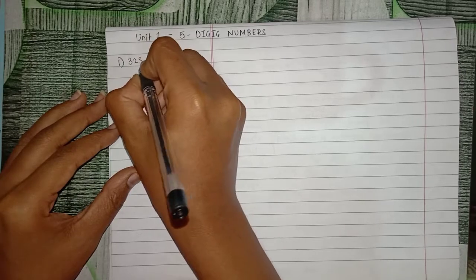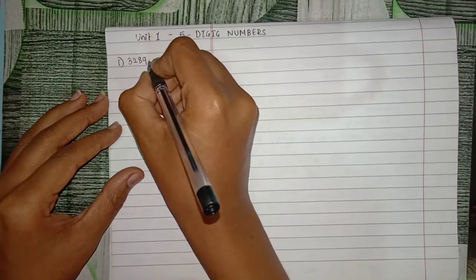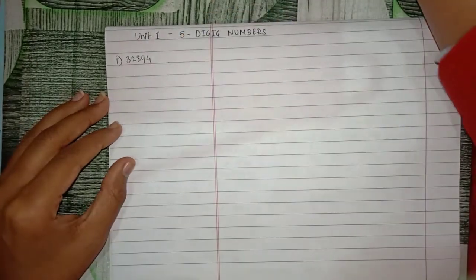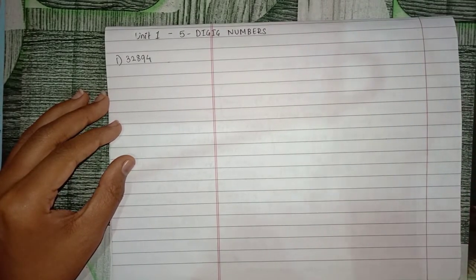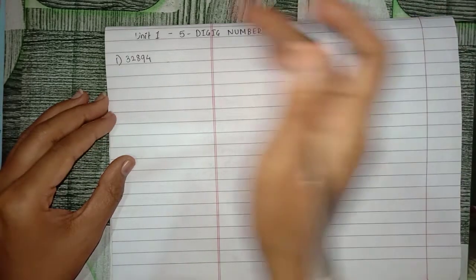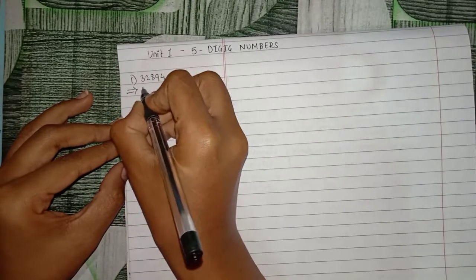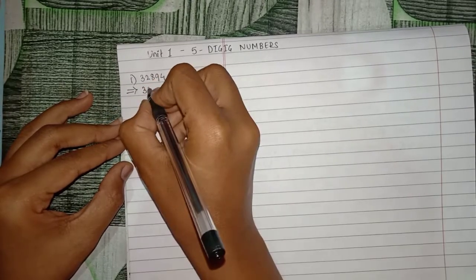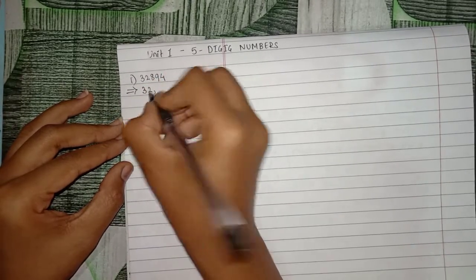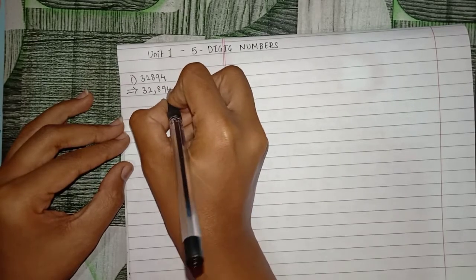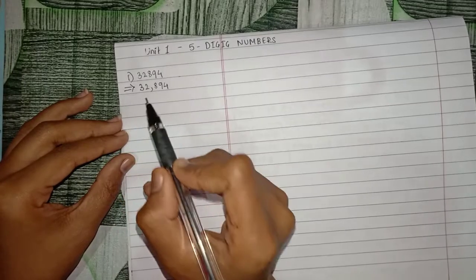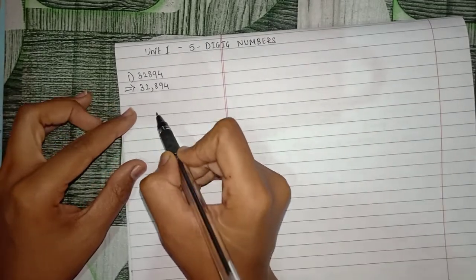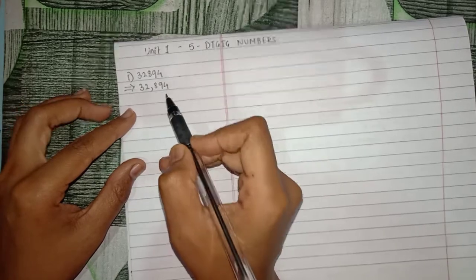What we have to do is insert commas at appropriate places. How we do this is: after 32, then comma, 894. Why we did this is they have told us to put commas at appropriate places. In this we are learning five-digit numbers, right?